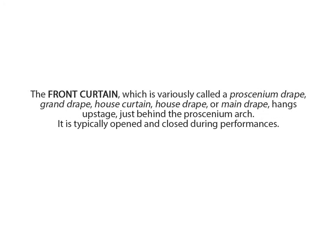The Front Setting. Theater drapes and stage curtains are large pieces of cloth which mask backstage areas of a theater from spectators. They're designed for a variety of specific purposes and come in many types. The Front Curtain, which is variously called a proscenium drape, grand drape, house curtain, house drape, or main drape, hangs upstage just behind the proscenium arch. It is typically opened and closed during performances.